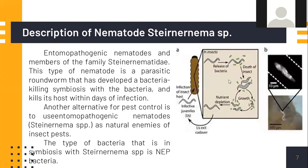The entomopathogenic nematode, genus Steinernema sp., is a member of the family Steinernematidae. This type of nematode is parasitic and develops a symbiotic relationship with bacteria, killing the host through infection. Another alternative pest control is using entomopathogenic nematodes as natural enemies of insect pests. The type of bacteria in symbiosis with Steinernema sp. is Xenorhabdus bacteria.